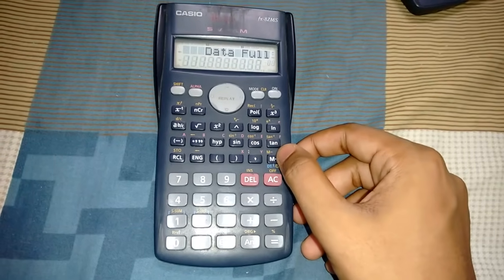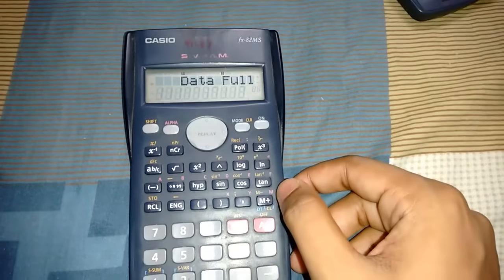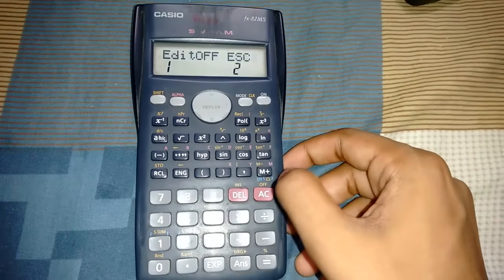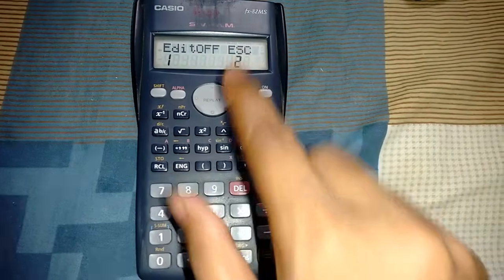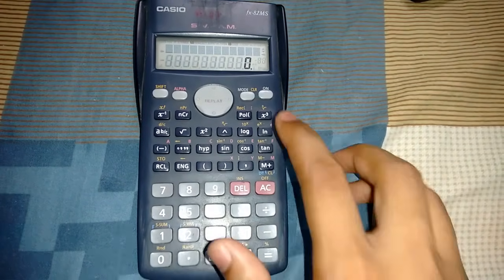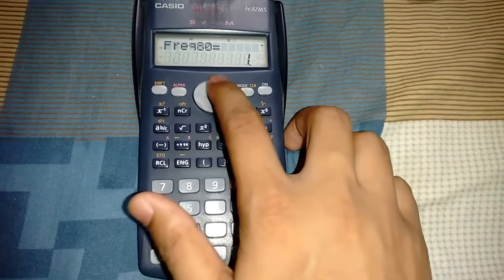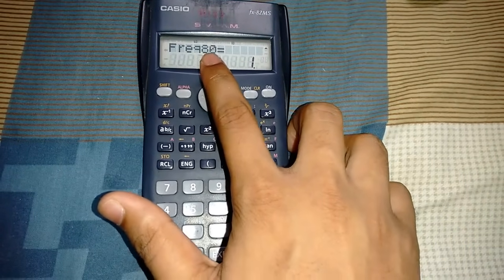Now it shows Data Full. After that, again you need to press the M plus button. It shows Edit Off and Escape. Press 2, now press the up arrow key. It shows Frequency 80 equals 1.